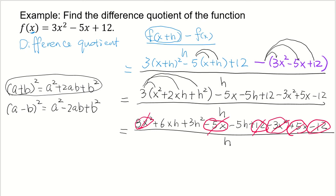So what's left over here? I have 6xh plus 3h squared minus 5h, that's everything left on top, divided by h. So right here, every term on top has a factor of h.